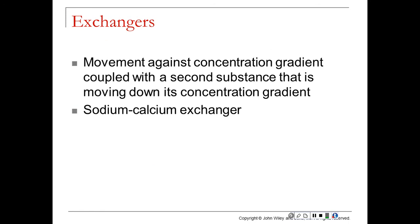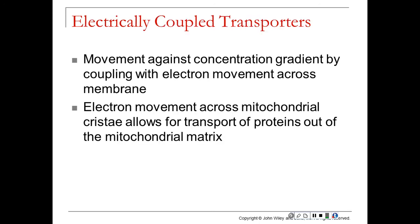Exchangers move against the concentration gradient by coupling with a second substance — the sodium-calcium exchanger is an example of this. There are also electrically coupled transporters, where the movement against the concentration gradient is coupled with electron movements across the membrane. One example is when the mitochondrial cristae allows for the transport of proteins out of the mitochondrial matrix, which drives the formation of lots of ATP through the process of oxidative phosphorylation.